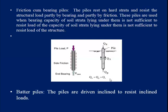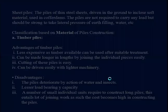Next is the batter pile. These piles are driven at an incline to resist inclined loads. The batter piles are driven on the inclined side to resist inclined forces. Batter piles are generally used to prevent horizontal thrust and inclined forces.